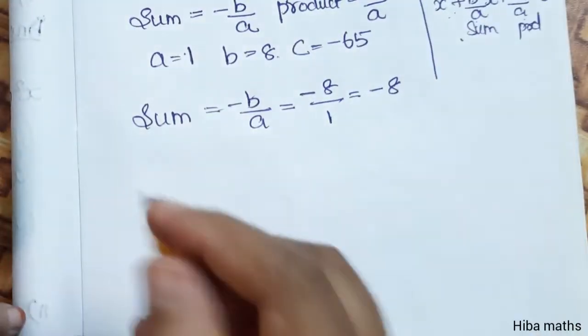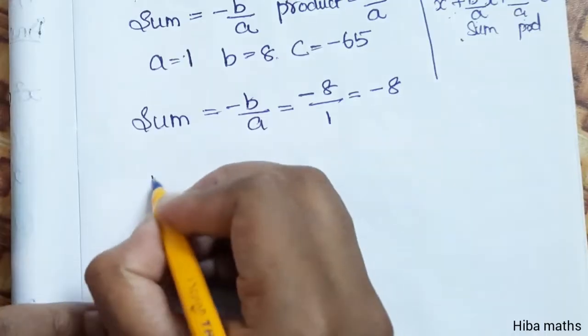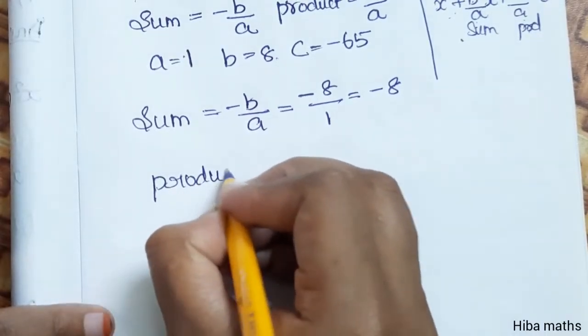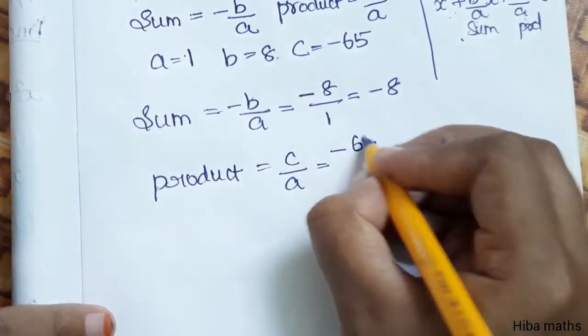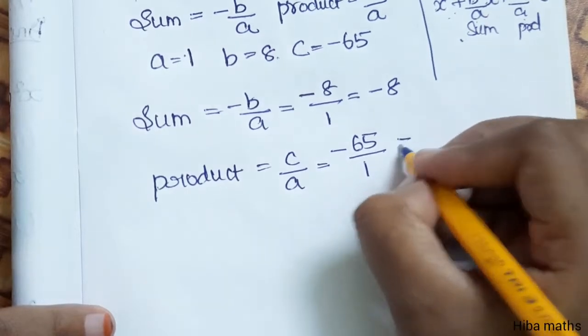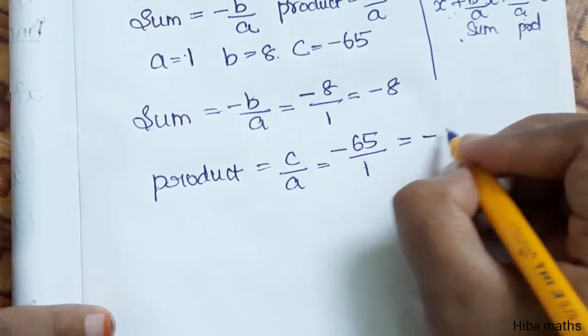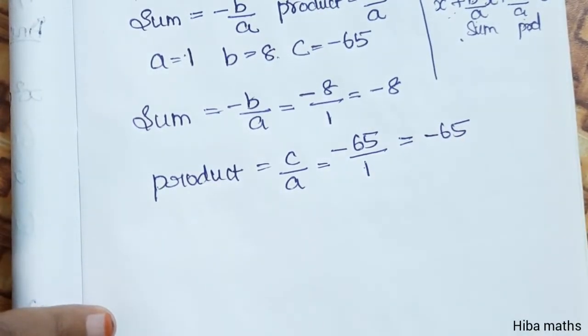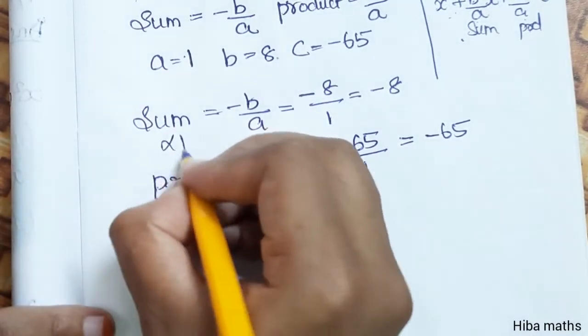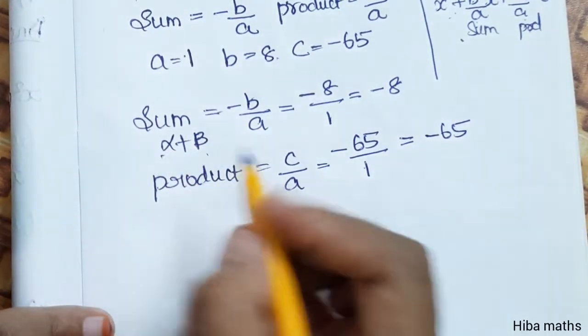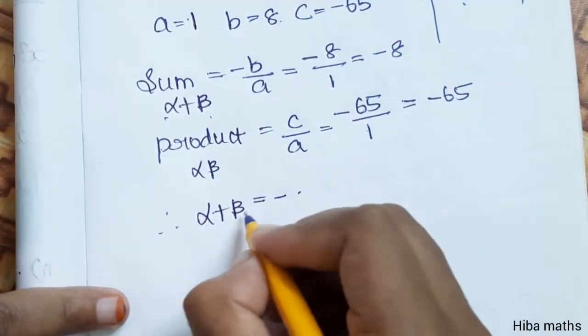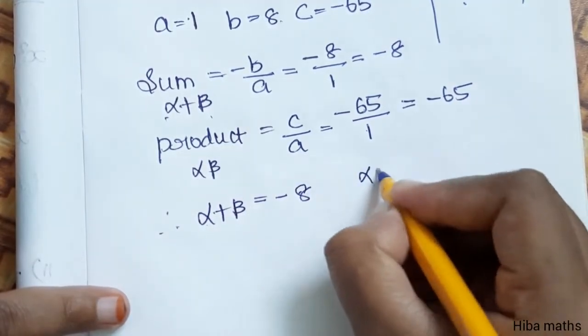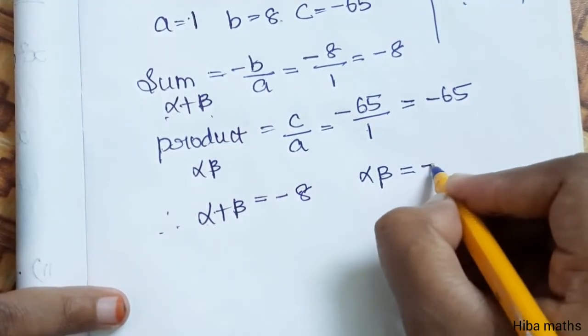Product is c by a, that is minus 65 by 1, which is minus 65. So alpha plus beta is minus 8, and alpha into beta is minus 65.